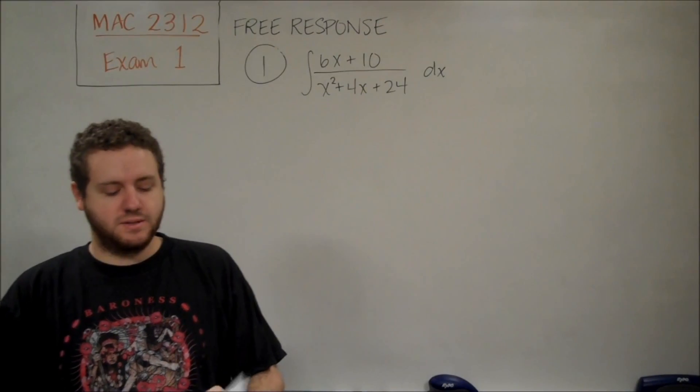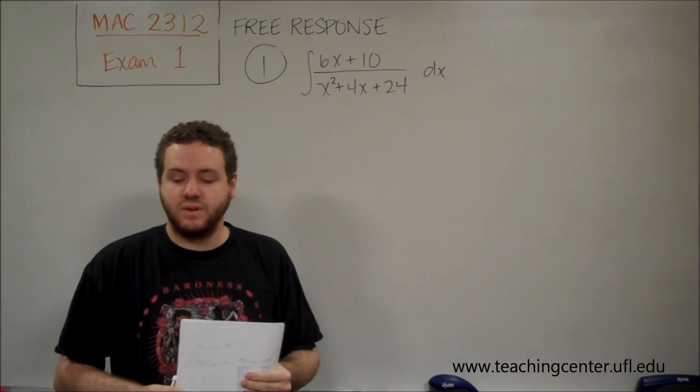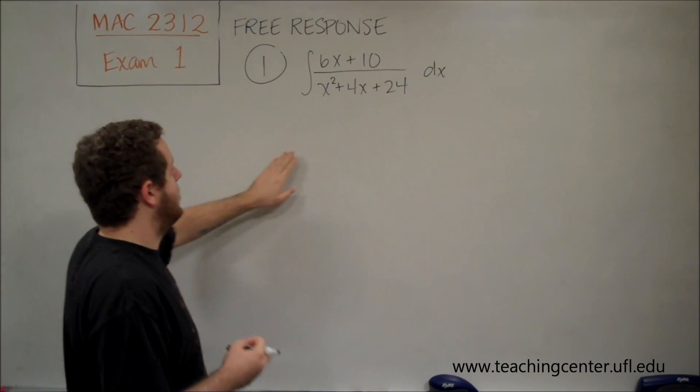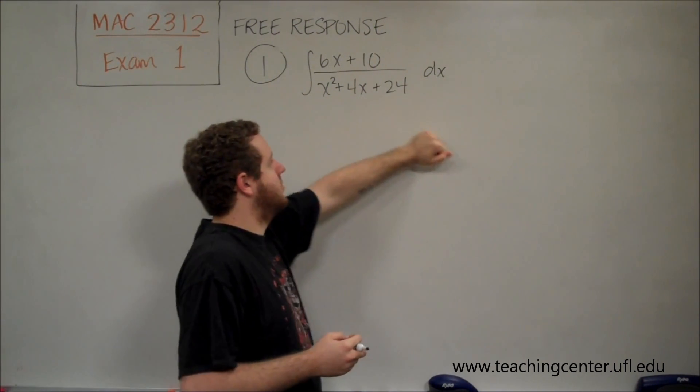For number one on the free response, we need to just evaluate this following integral. So you have 6x plus 10 over x squared plus 4x plus 24 dx.